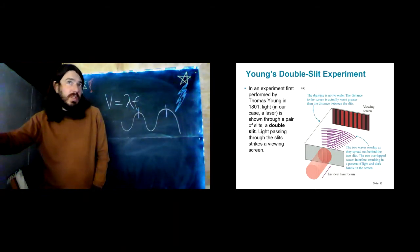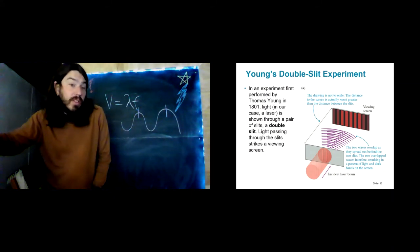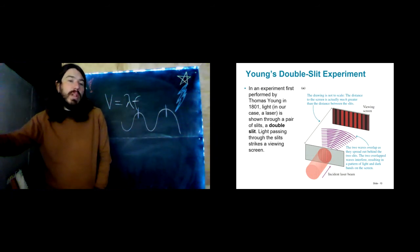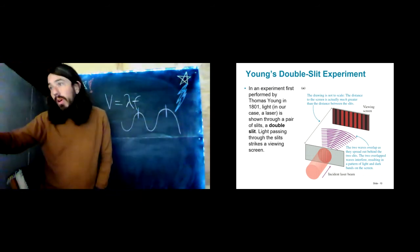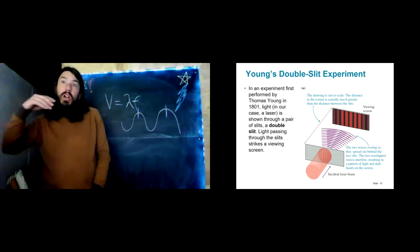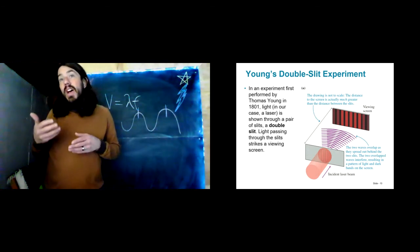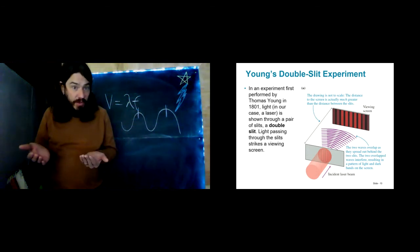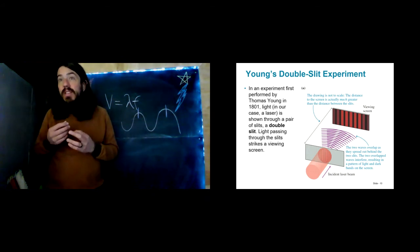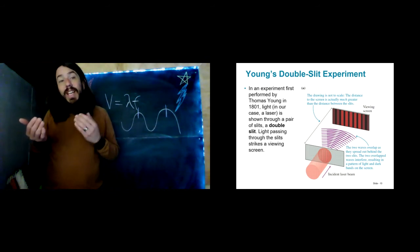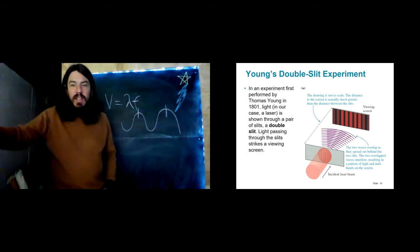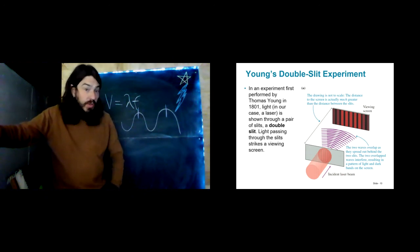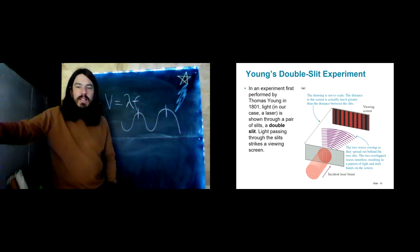That's Young's double slit experiment, and it's very similar to another effect we heard earlier in the semester. I played you a sound from two sources, and as we walked around the room we heard quiet, loud, quiet, loud, quiet, loud. The reason was because of waves interfering. When it was quiet, the sound from one source was out of phase with the sound from the other source. When it was loud, the sound wave from one source was in phase with the sound from the other source.